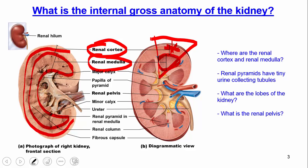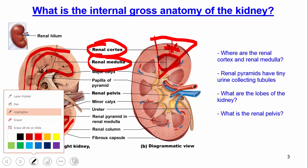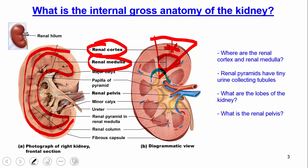The medulla has all these different tubules that help produce urine. Whenever you have urine, it's going to go into this interior region called the pelvis. These different projections from the pelvis are called calyces, but the interior portion itself is called the pelvis. Then urine comes down the ureter, goes to the bladder, and goes out the urethra.